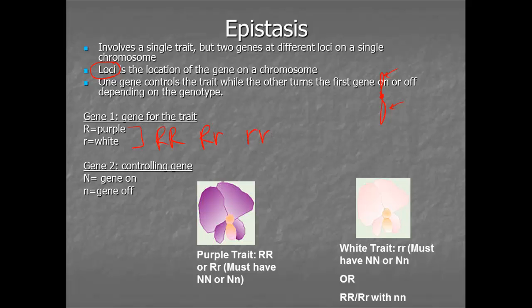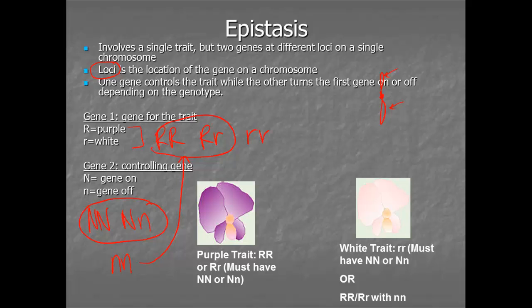That second gene can actually turn on or off the production of the color. So if color is turned on, you get color; if color is turned off, you don't. So for these plants to be purple, they must have the gene turned on. Even a plant that should be purple could turn out to be white if the color production is turned off. Now, while we have one trait, we do have two genes, so these are going to have to be the big 16-box Punnett squares.